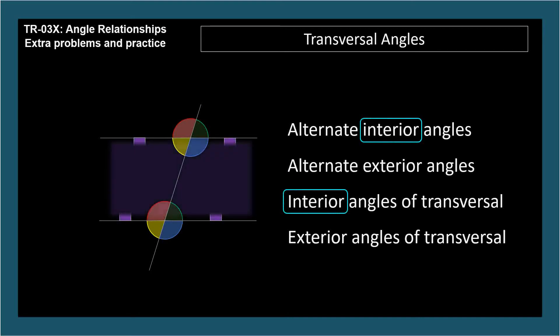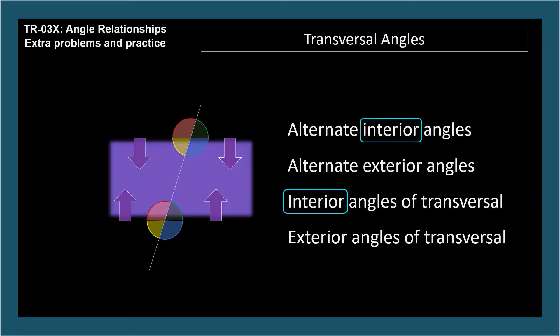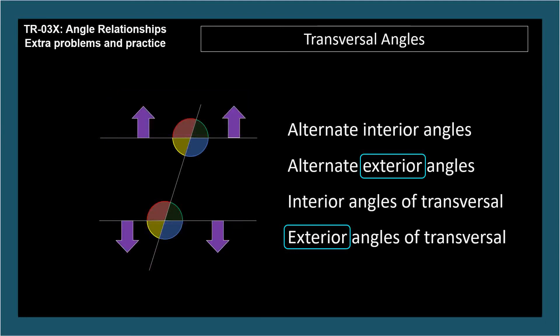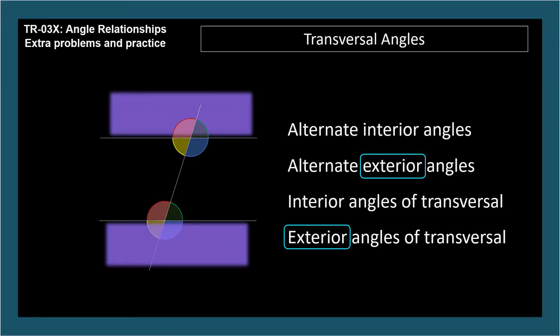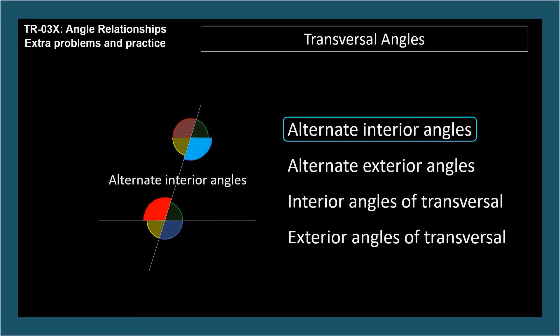The word interior means inside or between the parallel lines. The word exterior means outside the parallel lines. So alternate interior means opposite sides of the transversal and between the parallel lines. So these are alternate interior angles and so are these. Alternate interior angles are congruent.